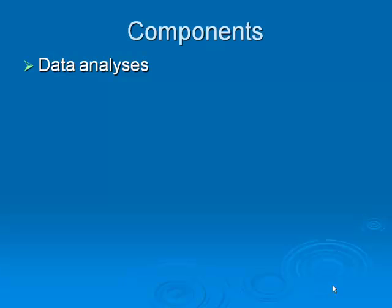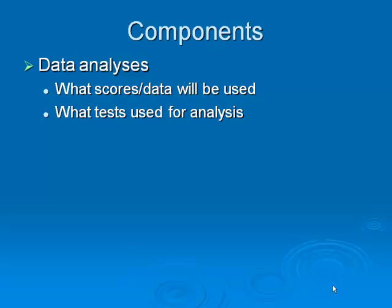And then instead of a results section, typically you have more of a data analysis section. Here you'll talk about what scores or data will be used, will be analyzed. So we'll evaluate people's average scores on the BDI-2 or whatever it is. And then what tests you're going to use for analysis. Analysis of variance will be used to blah, blah, blah. A Pearson coefficient will be calculated to determine the relationship between blah, blah, blah. Whatever it is, you say what test you would use and what you're going to use it for. Not just an ANOVA will be used to analyze the results. No, it's too vague.